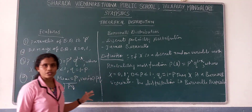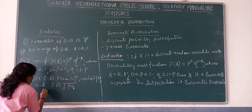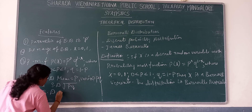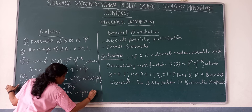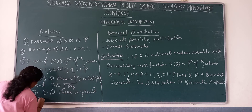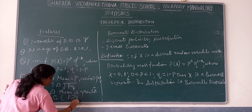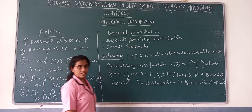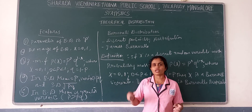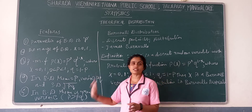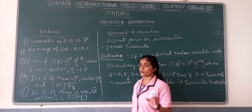That is the fourth feature of Bernoulli distribution. The fifth and last feature: in Bernoulli distribution, mean is greater than variance. Mean is P and variance is PQ, so P > PQ. This is also a possible exam question: which distribution has mean greater than variance? The answer is Bernoulli distribution.